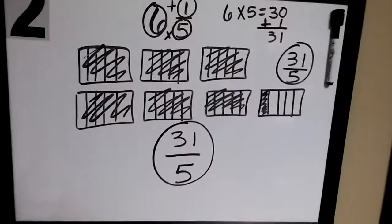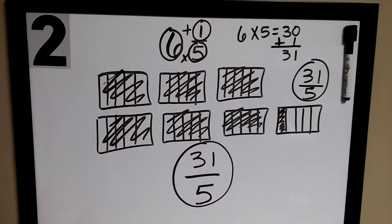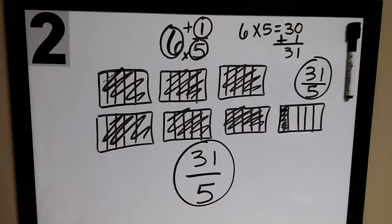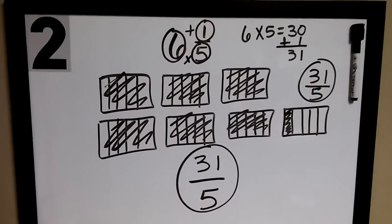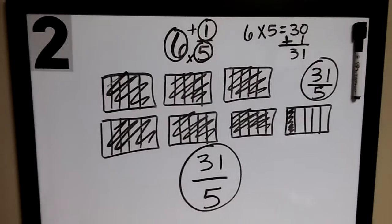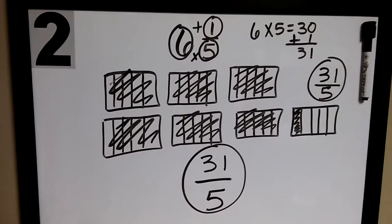So I've shown you six and one-fifth as a model, converted to an improper fraction. And I've shown you using calculations by multiplying the whole number and the denominator and adding the numerator.